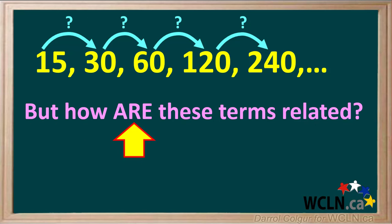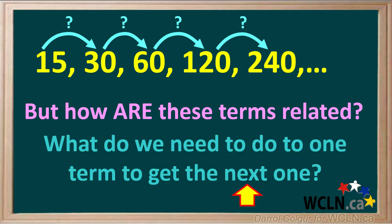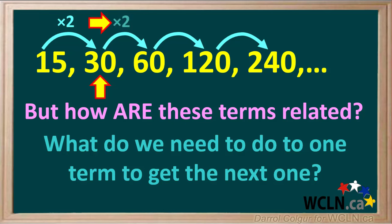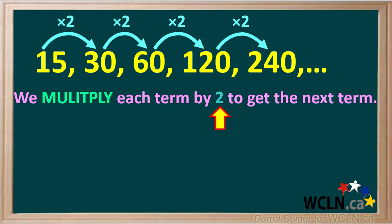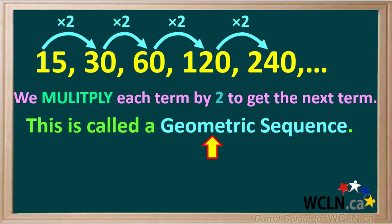But how are these terms related? What do we need to do to one term to get to the next one? Notice when we multiply 15 by 2, we get the next term 30. And when we multiply 30 by 2, we get the next term 60. Similarly, 60 times 2 is equal to 120, and 120 times 2 is equal to 240. So we multiply each term by 2 to get the next term. When we multiply each term by the same number to get the next term, we call this a geometric sequence.